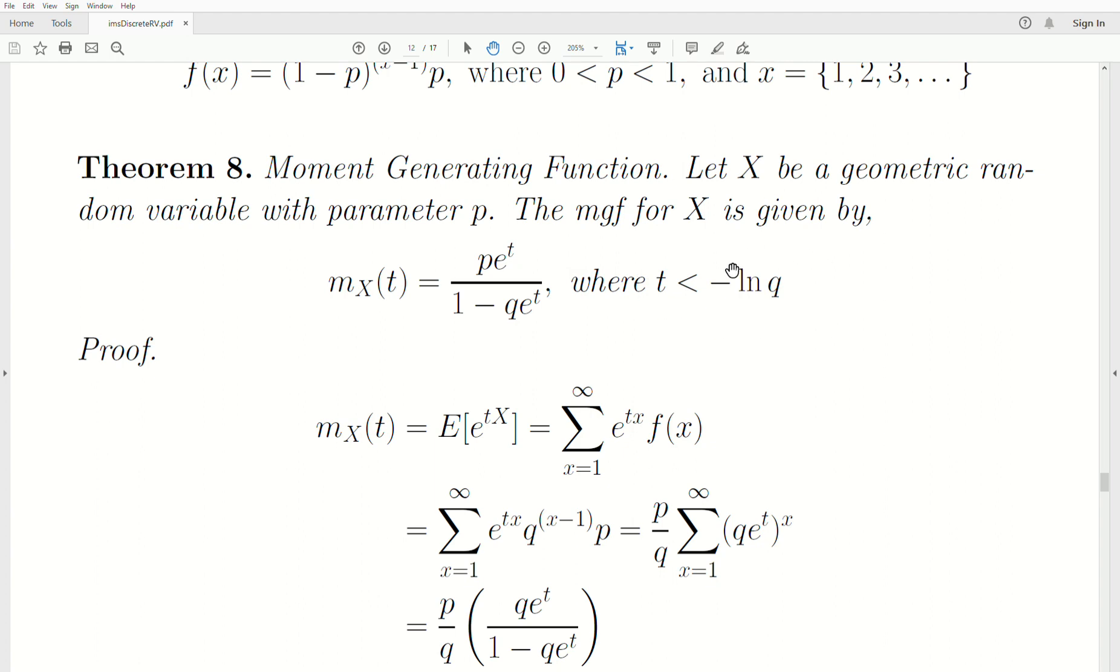Where T has to be less than minus natural log of Q. And remember, Q is one minus P, so it's between zero and one, and the log of numbers between zero and one are negative. And so that's why we have that negative sign. You could take it in and say the log of one over Q. Either way is fine.